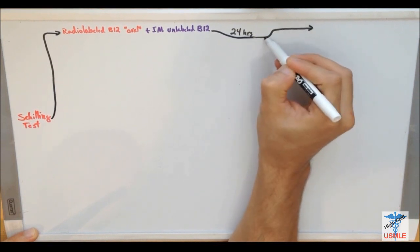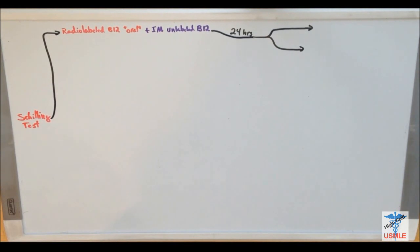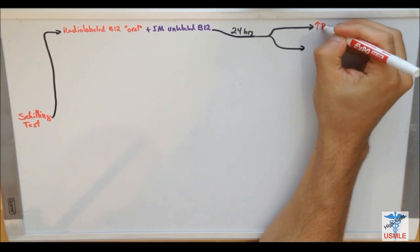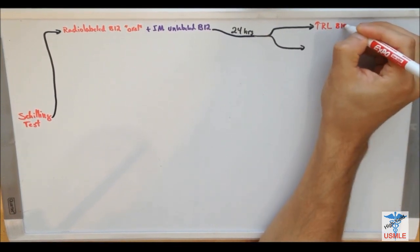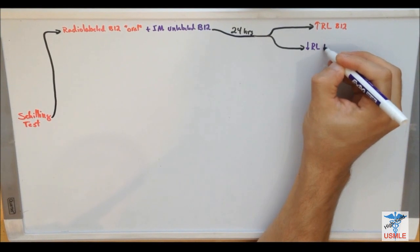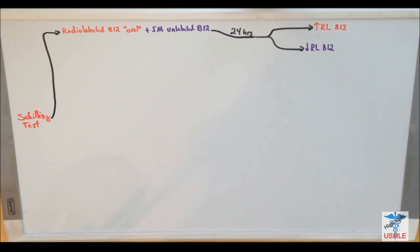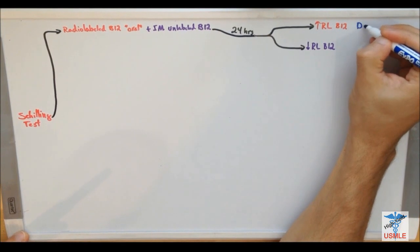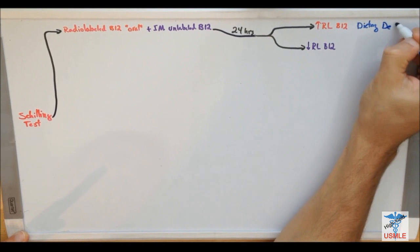So you can get two different results. You can either have increase, and I'll put RL for radio-labeled B12, or you can have decreased radio-labeled B12. Now, what does this mean? So if you have increased radio-labeled B12, it tells you that the radio-labeled B12 was ingested and it was metabolized and it was absorbed from your GI. So there's no pathologic events that is inhibiting its absorption from your GI, and it was normally absorbed. And since there's no pathologic reasons, this indicates dietary deficiency.